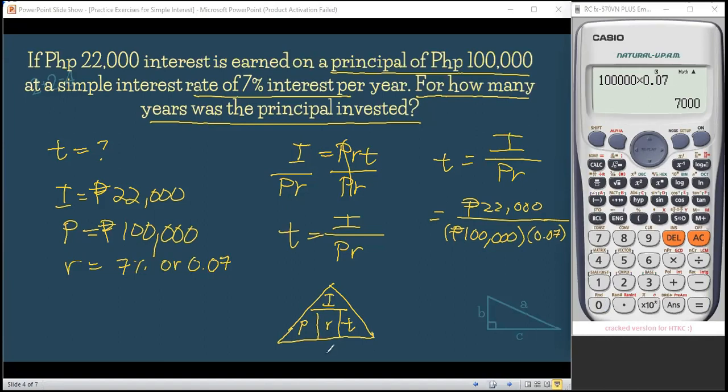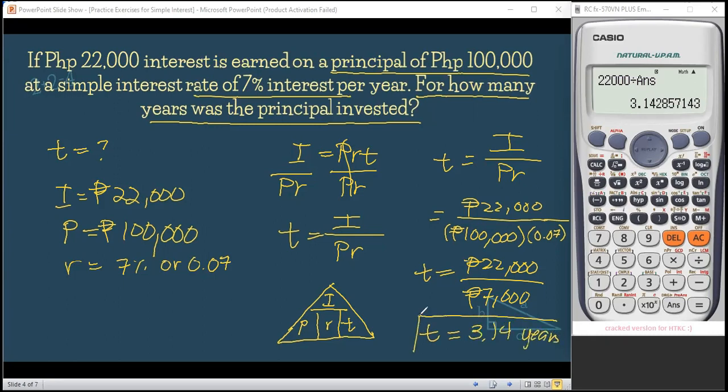So 7,000 pesos is what we'll write now in the denominator because we simplified it. So that is 7,000 and this is 22,000 pesos. Now, using again our calculators, 22,000. So I said, we can use the answer because whatever our last computation was, that's what it recorded as answer divided by our answer earlier which is 7,000 and our result will be 3.14. So actually, if you do this in two months, that's better. But for uniformity of our answers in our examination, let us use the decimal. So that is 3.14 years. So if the answer is 3.14 years, very good. You got the correct answer.